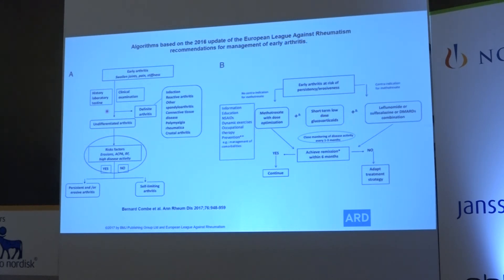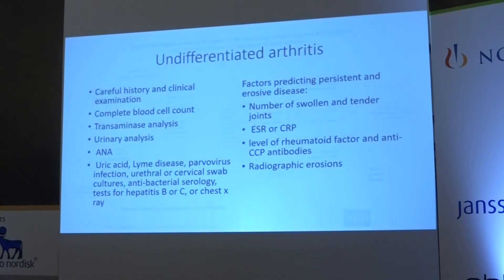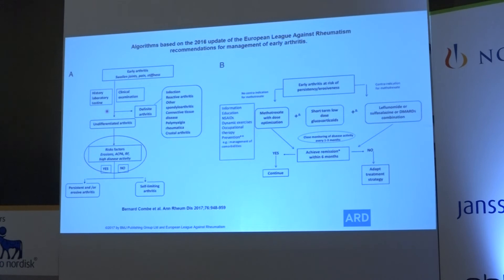For patients with undifferentiated arthritis who are at risk of progression, the EULAR guideline recommends starting them on DMARDs — mainly methotrexate — treating them the same way as definite rheumatoid arthritis.